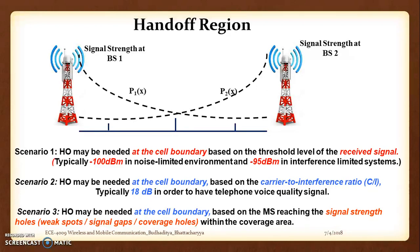At the end of the previous lecture we discussed a simple problem showing how 40 voice channels can give rise to 84 voice channels over the same coverage region if we go from a high-powered single omnidirectional antenna to multiple low-powered transmitters using frequency reuse. That was the main briefing of the earlier lecture.